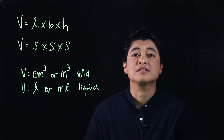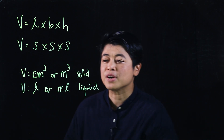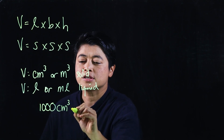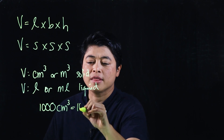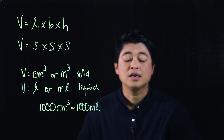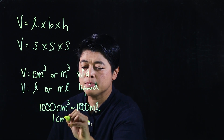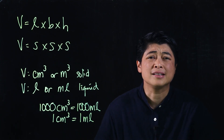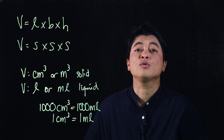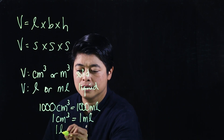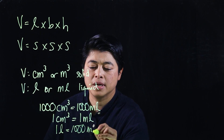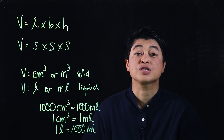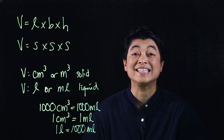If a problem involves both a solid and a liquid within the solid, we need both units of measurement. We should remember that 1000 cm³ equals 1000 milliliters, so 1 cm³ equals 1 milliliter. We should also know that 1 liter equals 1000 milliliters. The problems I'll be discussing come from pages 166 and 171.